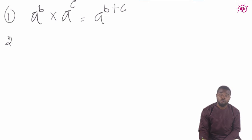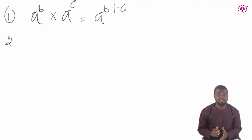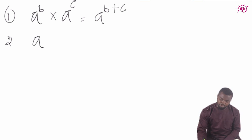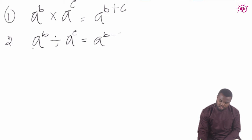The second law is division of numbers with the same base. That means when two numbers are dividing themselves with the same base, you subtract their powers. An example would be a raised to the power b divided by a raised to the power c. This would be equal to a raised to the power b minus c.